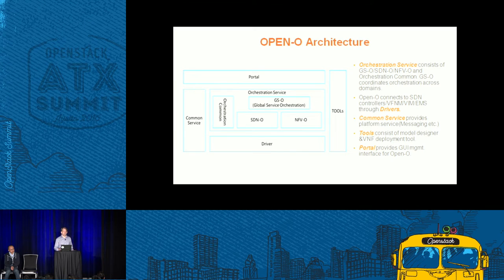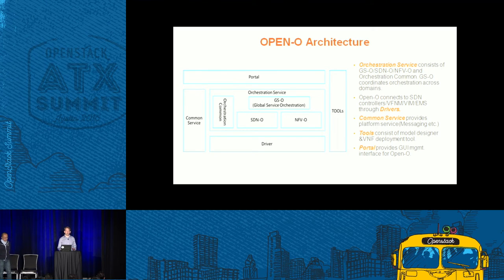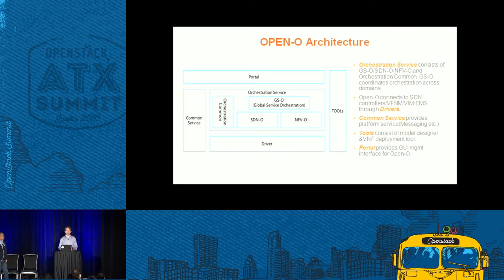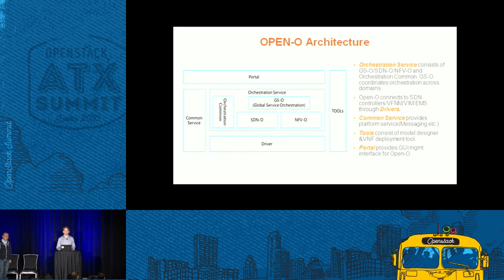Let's talk about our architecture at a very high level. We have an orchestration service consisting of three modules: Global Service Orchestration, which manages end-to-end orchestration; then SDNO, which manages connectivity services; and NFVO, which manages virtualization services. Under that is a common driver layer supporting multiple controllers, multiple VNFMs and multiple VIMs, all surrounded by common services and common tools.